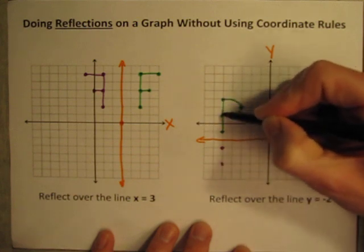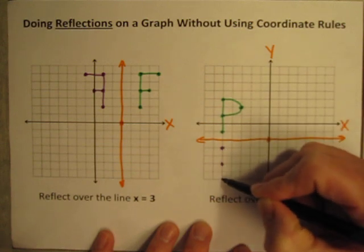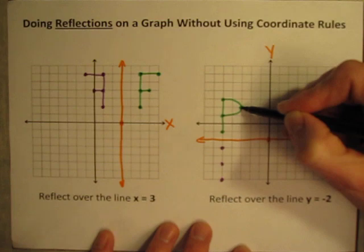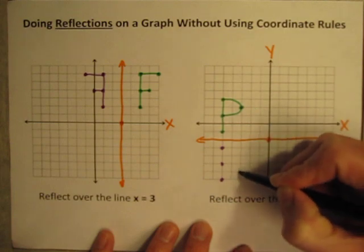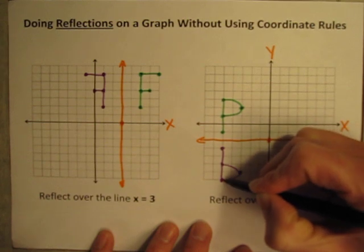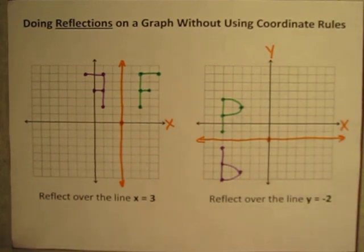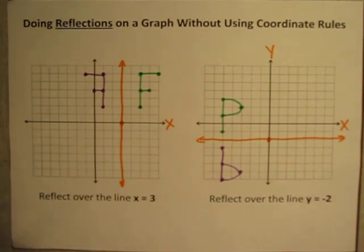This point is five above the line of reflection, so go five below. And this one is four above, so go four below. And there is our reflected letter P, reflected over the line y equals negative two. So you don't need to do fancy coordinate rules sometimes — they're helpful and can be good, but sometimes you can see it and plot it. You don't need to use all those coordinate rules when you're just reflecting on a graph.